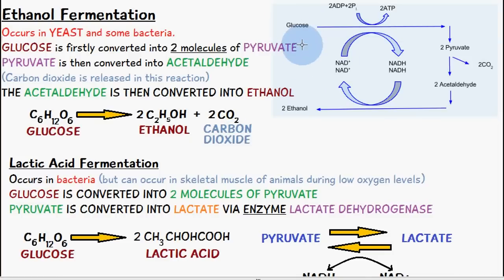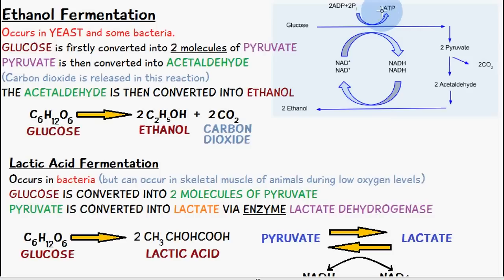You can see in the schematic diagram here, glucose is converted into two molecules of pyruvate. For this reaction to occur, we have two molecules of ADP in addition to two molecules of phosphate, which form two ATP. This process releases two molecules of ATP, and at the same time NAD+ is converted into NADH — these are electron carriers.